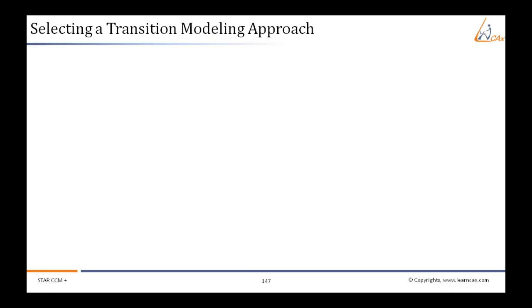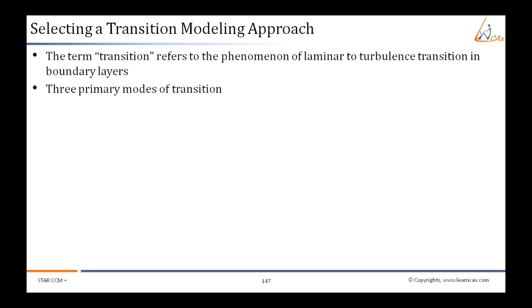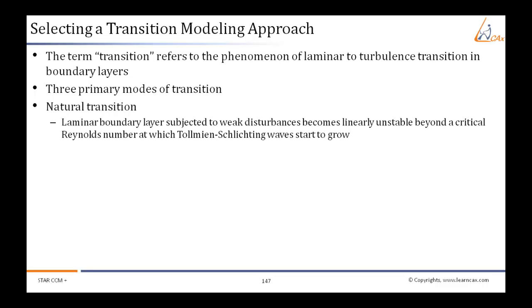In between the laminar and turbulent flow regimes lies the transition flow regime. What is transition? The term transition refers to the phenomena of laminar to turbulence transition in boundary layers. Three primary modes of transition typically involve natural transition, in which a laminar boundary layer subjected to weak disturbances becomes linearly unstable beyond a critical Reynolds number at which Tollmien-Schlichting waves start to grow.